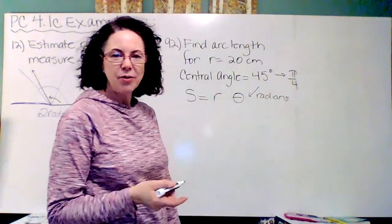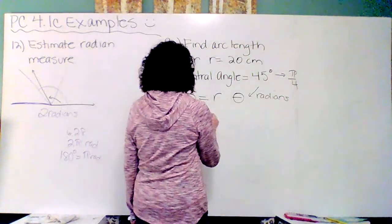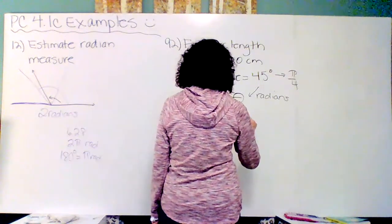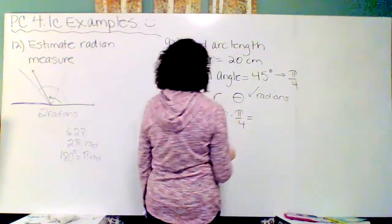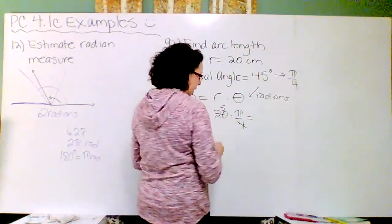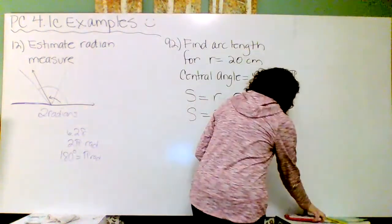So all I have to do is convert that to radians. We did that in a prior video. That's pi over 4. So our arc length is 20 times pi over 4. This 4 cancels and leaves a 5 pi.